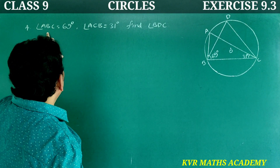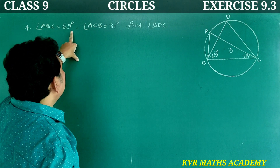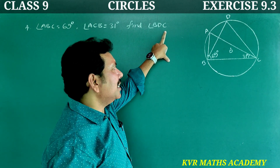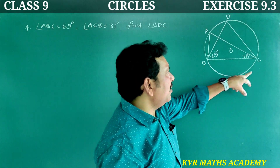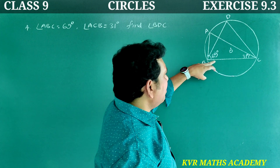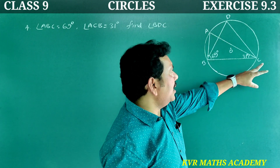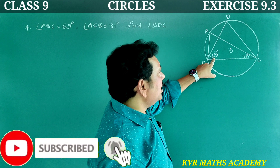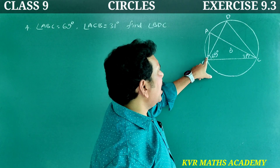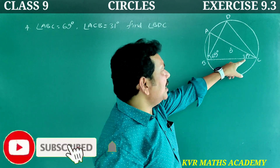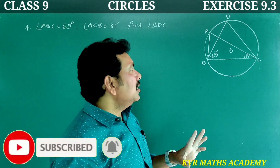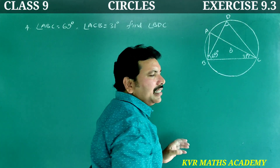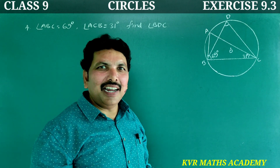Next, the fourth question: angle ABC is equal to 69 degrees and angle ACP is equal to 31 degrees. Find angle BDC. In the figure there is triangle ABC and triangle BDC. We have to find angle ADC.